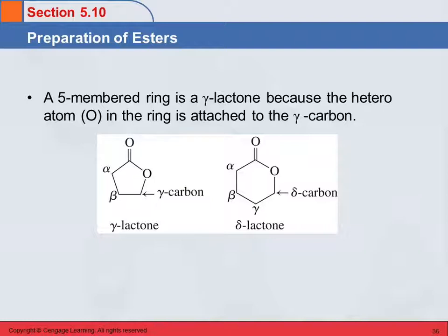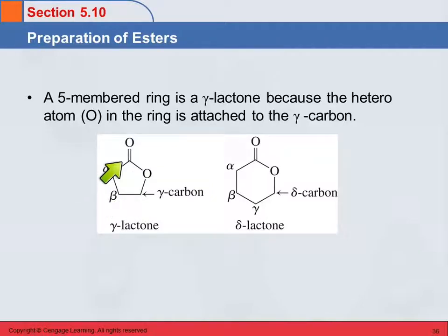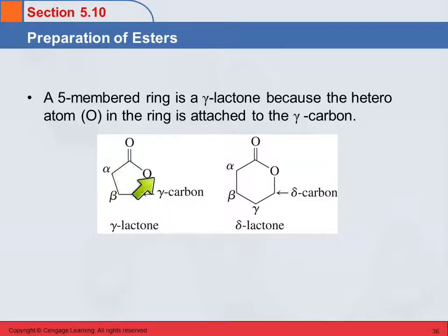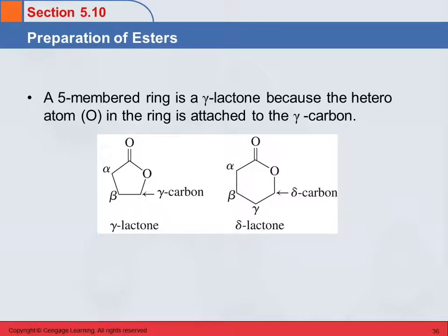I'm not going to test you on this, but a five-membered ring is called a gamma lactone because the oxygen is attached to the gamma carbon of the carboxylic acid — counting nothing, alpha, beta, gamma. When you have five members in the ring — four carbons and one oxygen — that's a gamma lactone. A six-membered ring is called a delta lactone because the oxygen is attached to the delta carbon, the fourth carbon over from the carbonyl carbon.